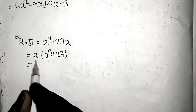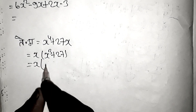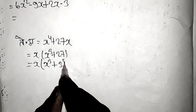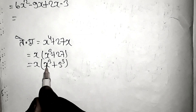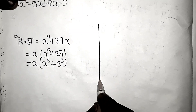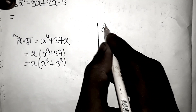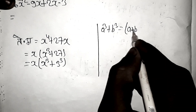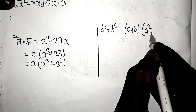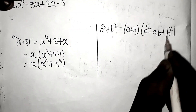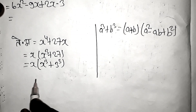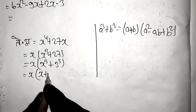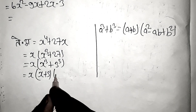27 is 3 cubed. So x cubed plus 27 is x cubed plus 3 cubed. We use the a cubed plus b cubed formula: a cubed plus b cubed equals a plus b times a squared minus ab plus b squared.